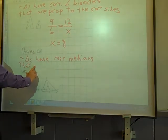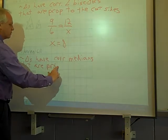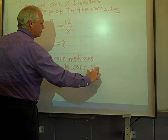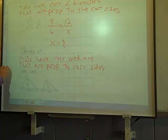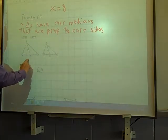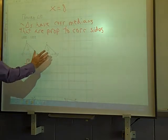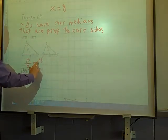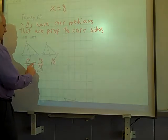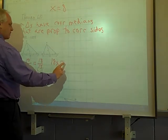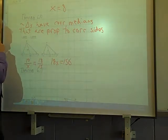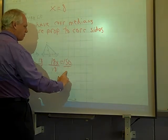That are proportional to corresponding sides. 10 is a median, x is a median. Let's make that ratio 10 over x, 18 and 15 are corresponding sides. 18 times x is 18x, 15 times 10 is 150. Solving for x, solving for the length of that median there, dividing by 18.